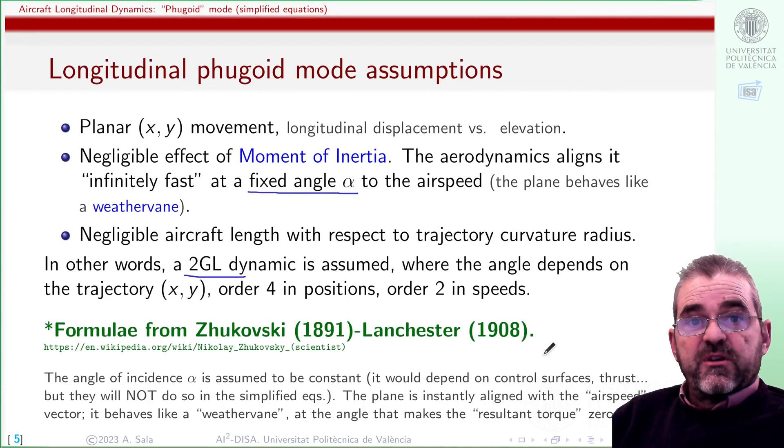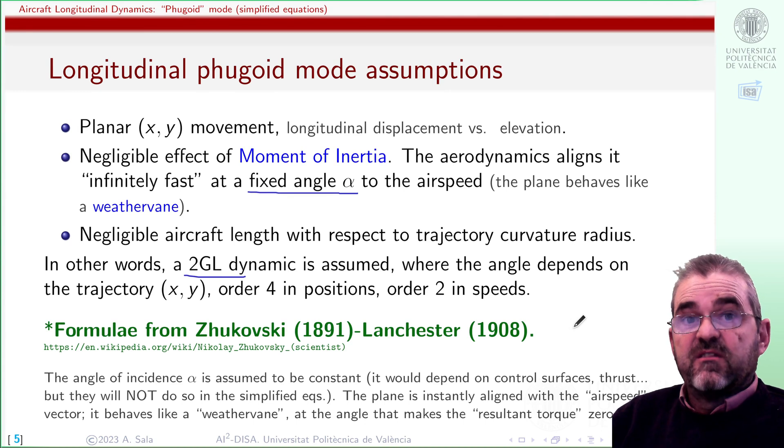The equations we are going to derive were first put forward by Nikolai Zhukovsky, a Russian scientist, and later derived in the Western world by Lanchester. These were the pioneers of flight dynamics, trying to understand the stability or instability of aircraft motion. So let's go with the equations.